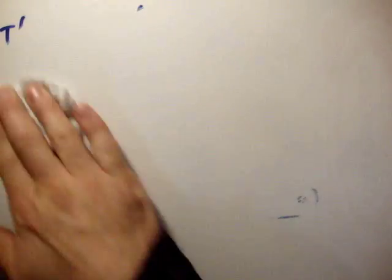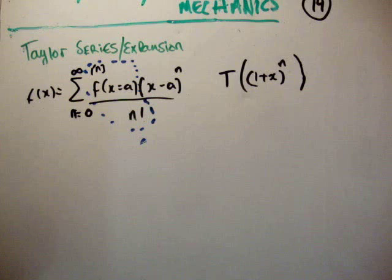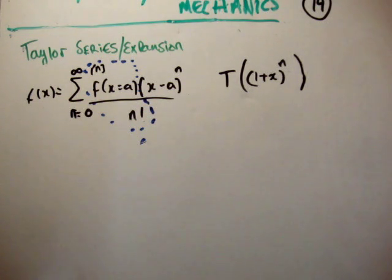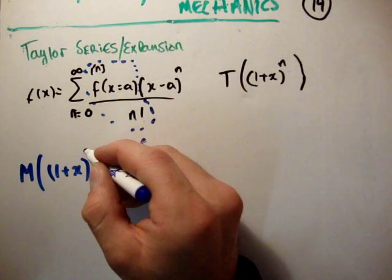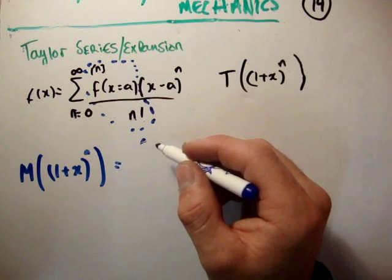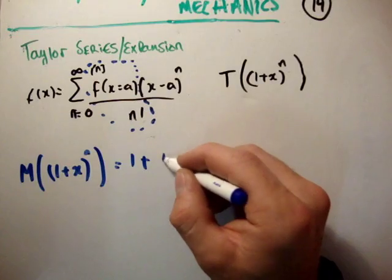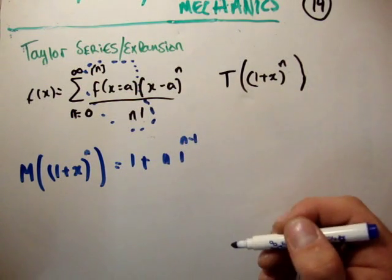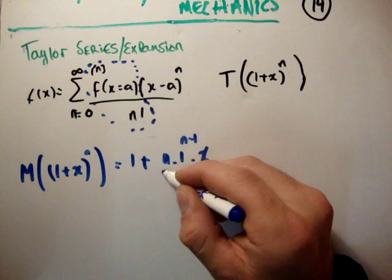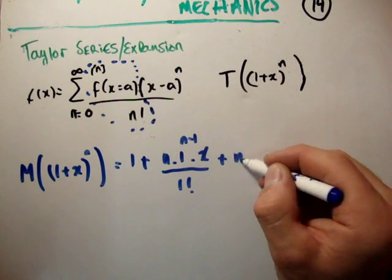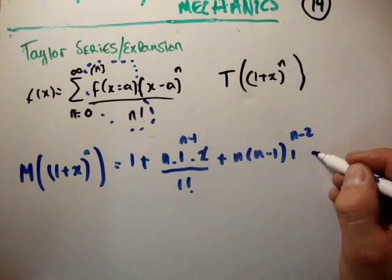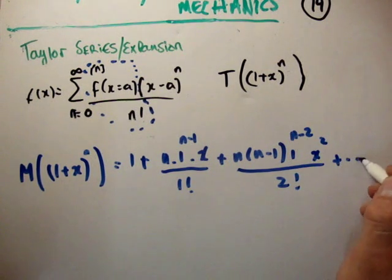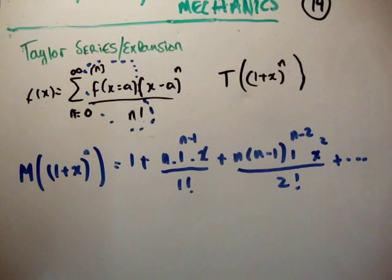So, let's go ahead and get the McLaren series. So, the difference here is, we just set a is equal to 0. So, if we set a is equal to 0, I'll let you do it yourself, but we find that the McLaren series of 1 plus x to the n is equal to 1 plus n times 1 to the power of n minus 1, we have x, and we divide it by 1 factorial. We have n, n minus 1, 1 to the n minus 2, we have x squared, divided by 2 factorial, and so on. Now, look, I just plugged in the figures, it's very straightforward. So, you can do that if you like, or you can accept it.